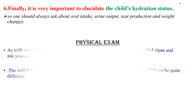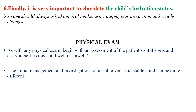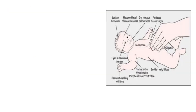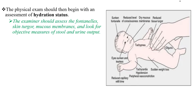On physical examination, begin with an assessment of the patient's vital signs and ask yourself: is this child well or unwell? The initial management and investigation of a stable versus unstable child can be quite different. The physical exam should then begin with an assessment of hydration status — examining the fontanelles, skin turgor, and mucous membranes, and looking for objective measurements of stool and urine output.